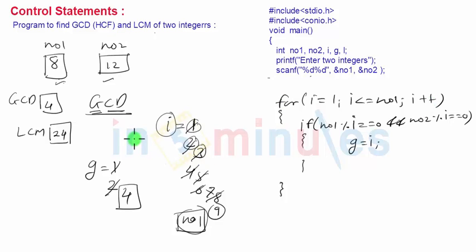Now let's see this part how it is going to work. Assuming our inputs are number 1 and number 2 as 8 and 12, we have two variables g for GCD and i for looping. As the for loop starts, i will be 1 and we check if number 1 mod i is 0 and number 2 mod i is 0. True, so g will be 1. Then i goes to 2, condition is true.